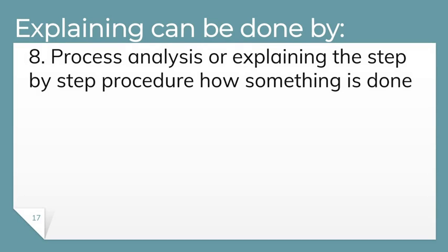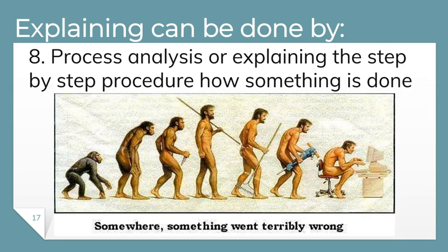Number eight is process analysis — explaining the step-by-step procedure on how something is done. For example, how humans evolved from a certain species of monkeys through time to who we are right now. We can see here a step-by-step procedure of how something becomes its final product. Those are the eight ways for writers to explain topics in an expository essay.